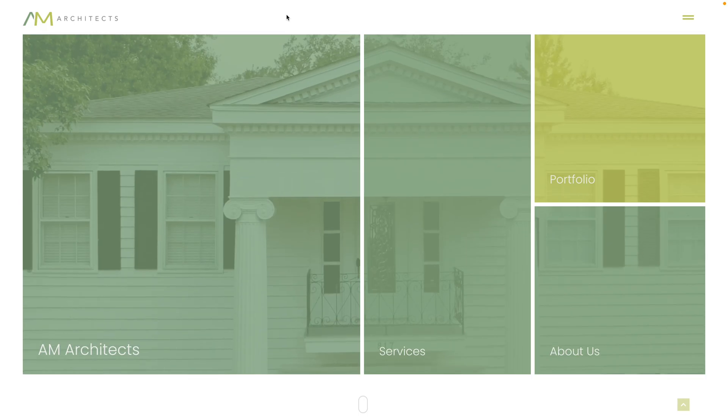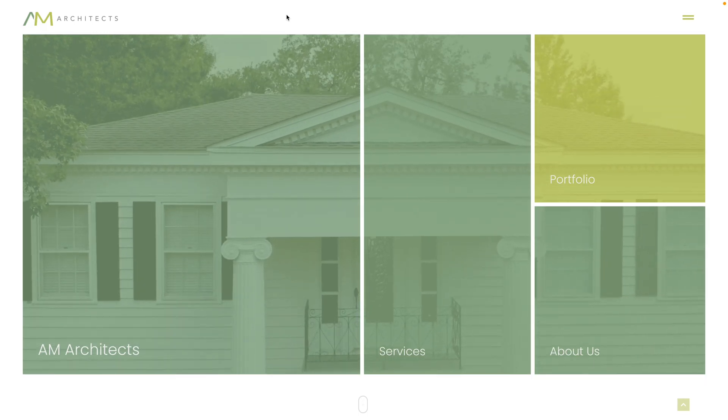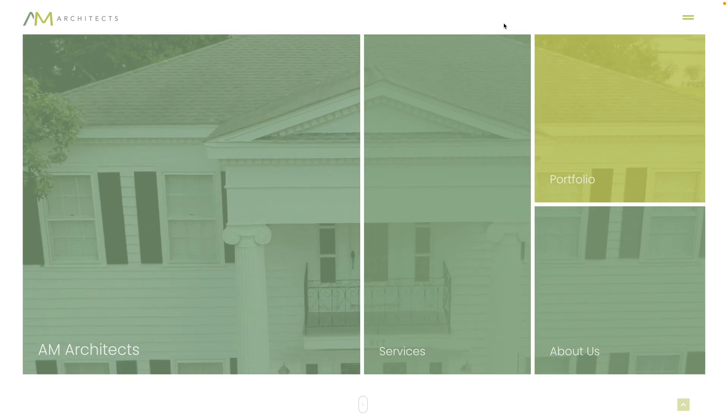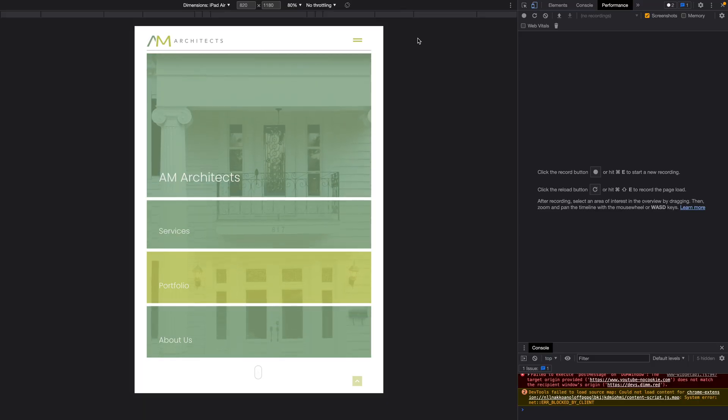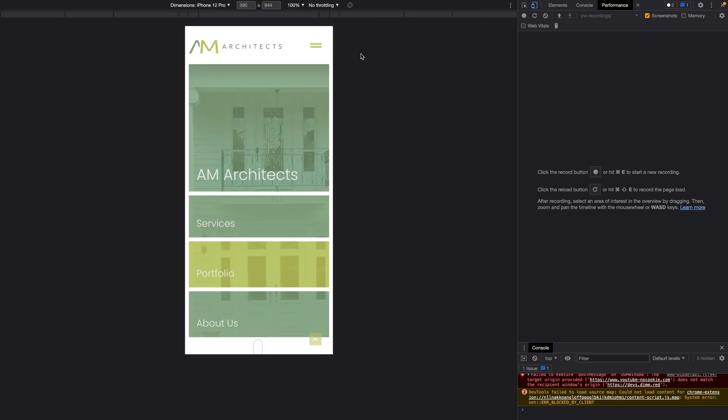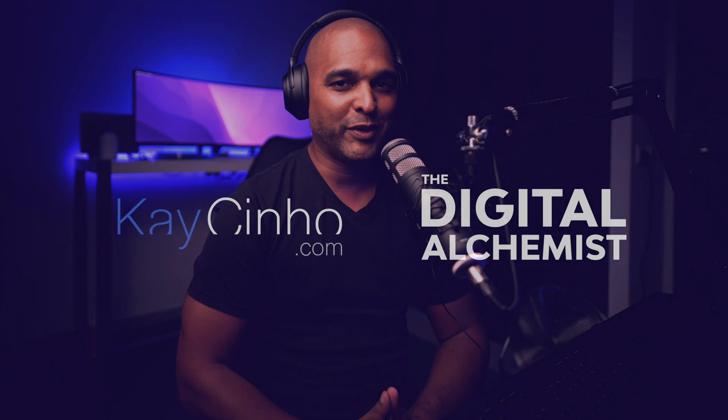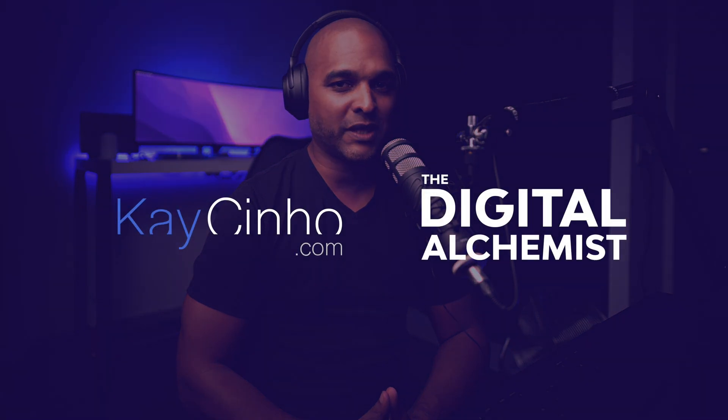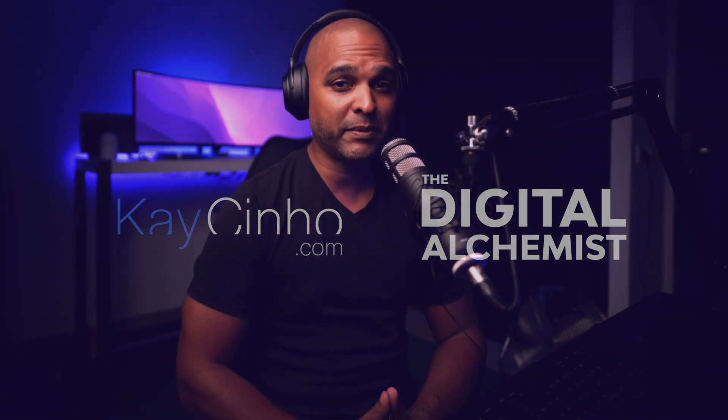In this video, I'm going to teach you how to create a beautiful hero section with a video background and a gorgeous grid on top of it. We will build it with Elementor Pro. I'm your host Cacenio from Cacenio.com — the Digital Alchemist. Today I'm going to teach you how to create a professional level homepage, and more specifically the hero section, which is the top section you see on most homepages.